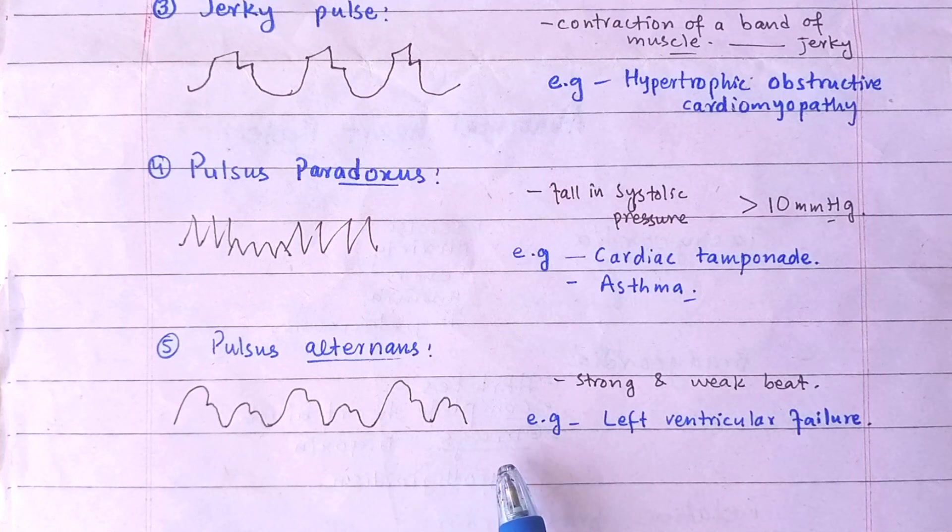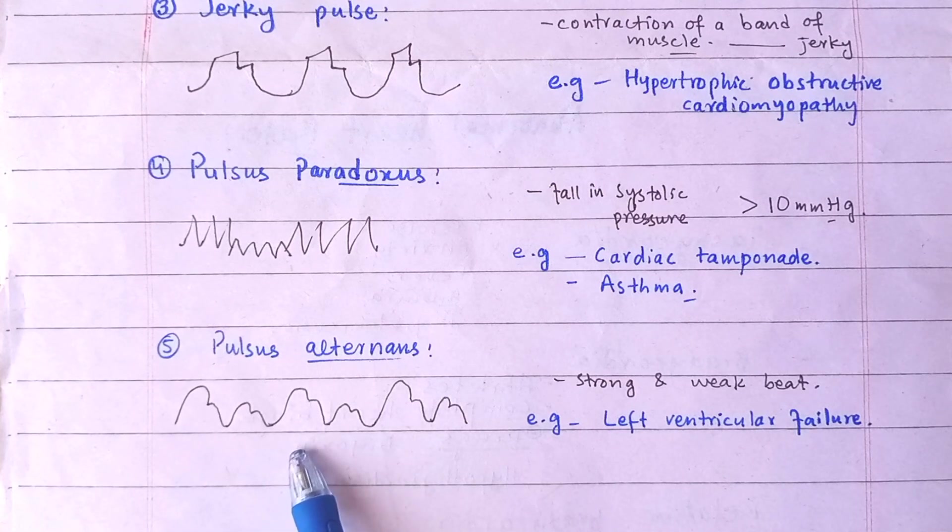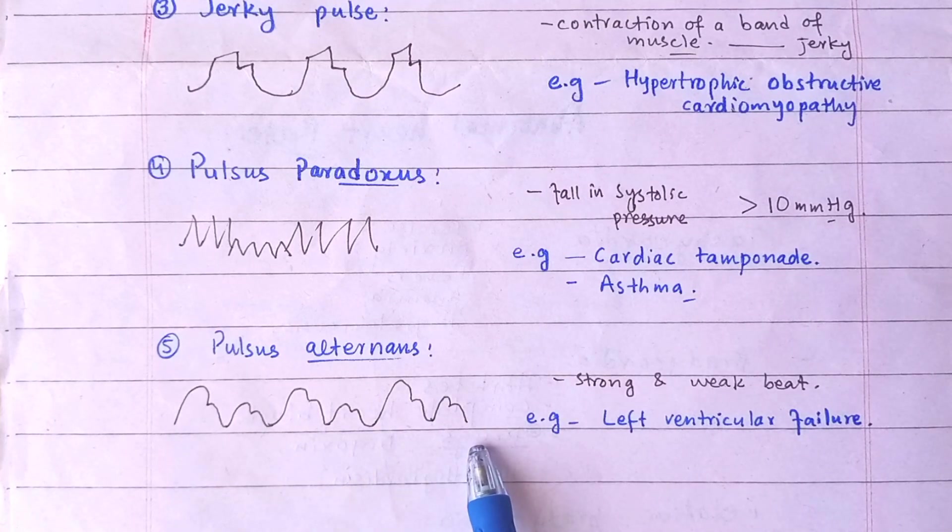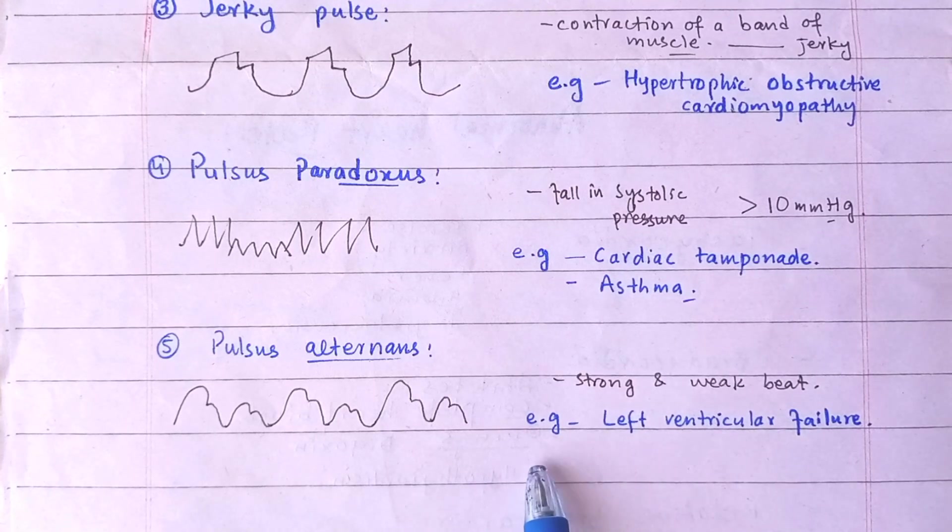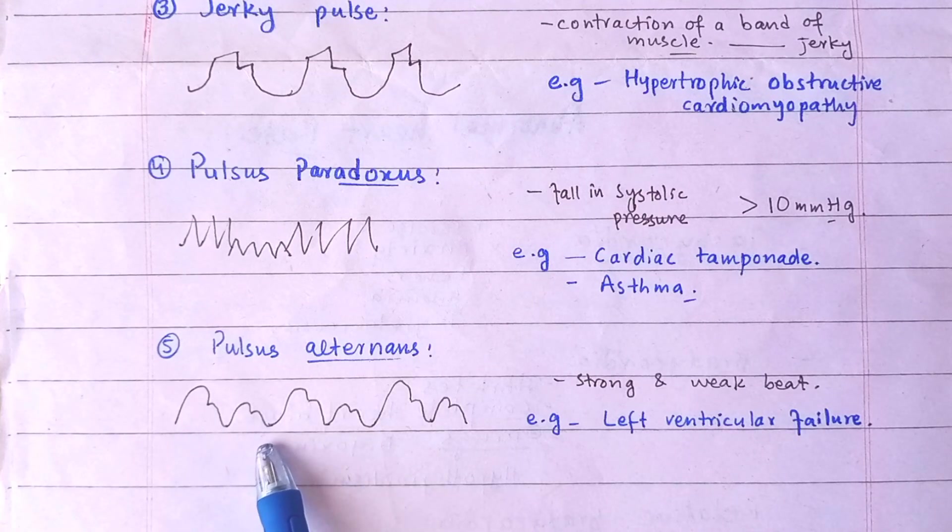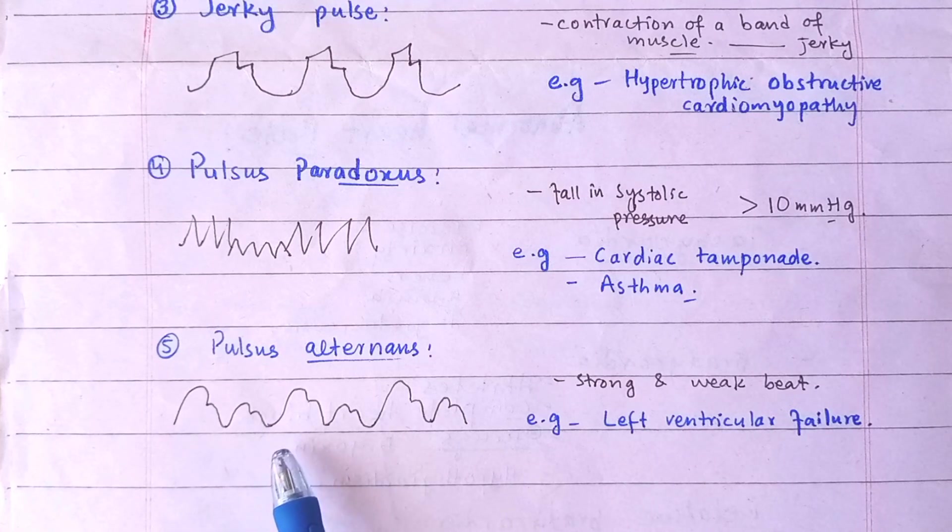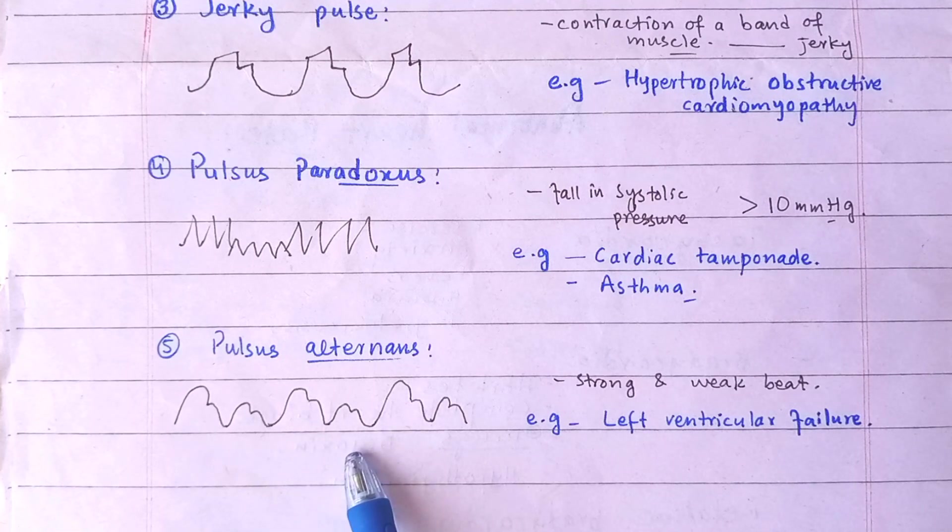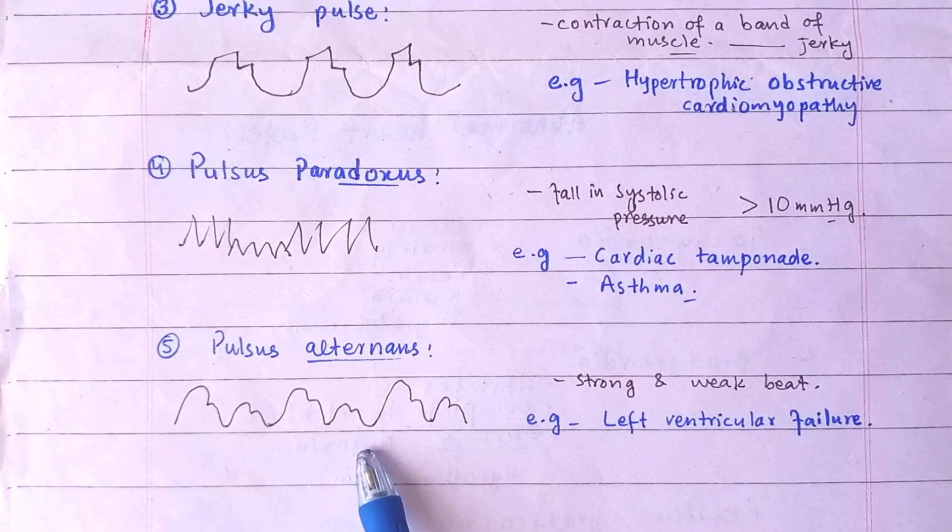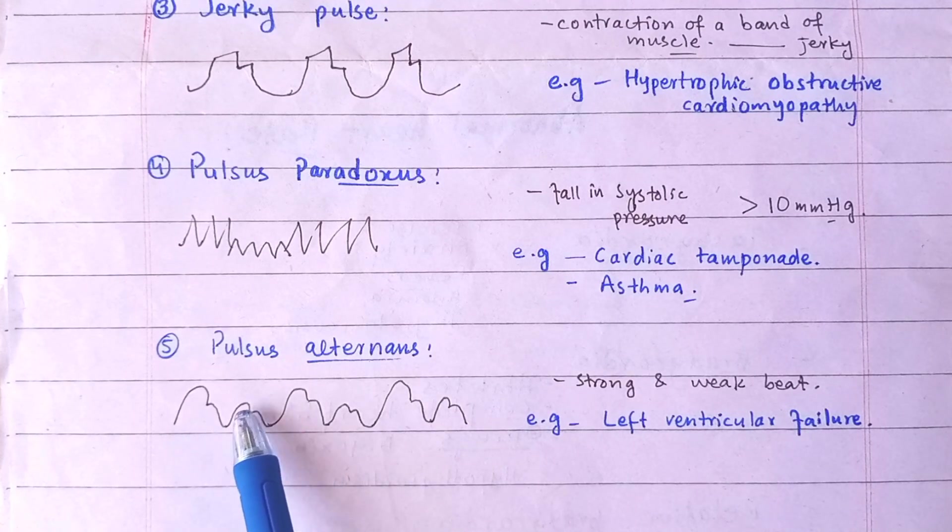The level of systolic pressure is high for strong beats and low for weak beats. This helps in confirming the presence of pulsus alternans by using blood pressure apparatus. For this, inflate the cuff above the systolic blood pressure level as determined by the palpatory method. Lower the pressure in the cuff gradually. At first, Korotkoff sounds of strong beats will appear. Note the number of these Korotkoff sounds per minute. Further lower the pressure in the cuff. When level of systolic pressure for weak beats is reached, the rate of Korotkoff sounds will suddenly become double. This phenomenon will confirm the presence of pulsus alternans.